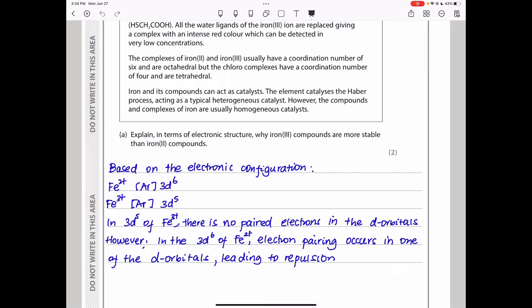Looking at the configurations, for the 3d5, the d-orbitals have no pairing. All the d-orbitals have one electron each. However, in 3d6, we have one d-orbital that is going to have paired electrons. And it means in that paired orbital, there is going to be repulsion, which will not occur in this case. In 3d5 of Fe3+, there is no paired electrons in the d-orbitals. However, in the 3d6 of Fe2+, electron pairing occurs in one of the d-orbitals leading to repulsion. Therefore, when one electron goes away, a more stable Fe3+ is formed.